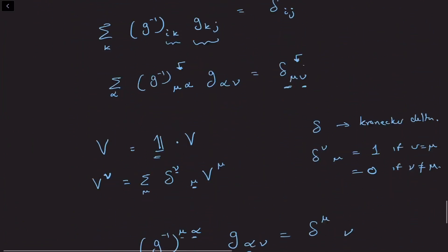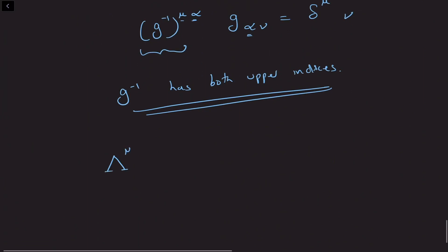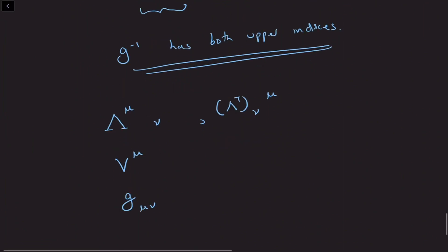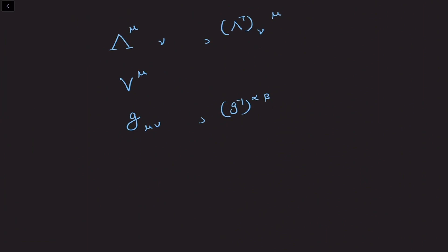Summarizing: the transformation matrix lambda has one upper index and one lower index; vectors have an upper index; lambda-transpose has a lower index first and an upper index second; the metric g has two lowered indices; and g-inverse has two raised indices. Whenever we write down an equation, the free upper indices on the left side must match the free upper indices on the right side, and the same must be true for the lower indices.